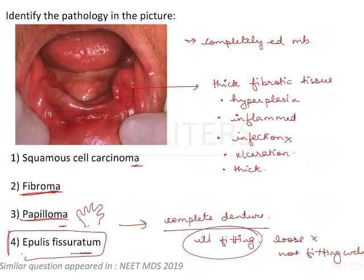A more specific answer for a completely edentulous arch, especially the mandibular anterior, is epulis fissuratum, because this is the most common site for epulis to occur. It could also be squamous cell carcinoma due to chronic irritation from complete dentures, but of the given options, epulis fissuratum is the most relevant answer for this question.